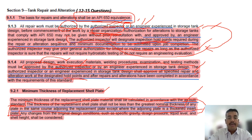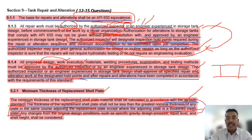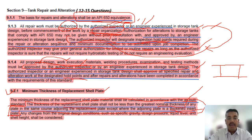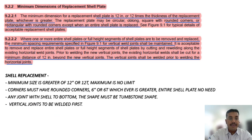If I find a shell and need to replace it, the shell plate thickness shall not be less than the nominal thickness of the existing plate. However, there is an exclusion: if there is a thickened insert plate — more than 3 mm — then it is excluded. This is the minimum thickness requirement for a replacement shell plate. It is a closed book question.